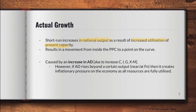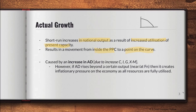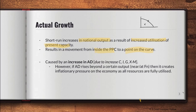Actual economic growth refers to a short-run increase in national output as a result of increased utilization of present capacity — looking at current levels of labor, land, entrepreneurship, and capital. An increase in any of these four factors of production causes a rise in national output. This results in a movement from inside the PPC to a point on the curve. Actual growth is caused by an increase in AD due to a rise in C, I, G, or net exports in the short run. If AD rises near full employment, it creates inflationary pressure because of a rise in GPL.